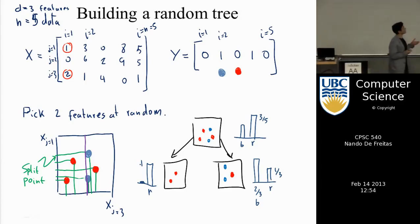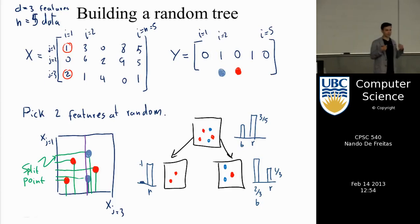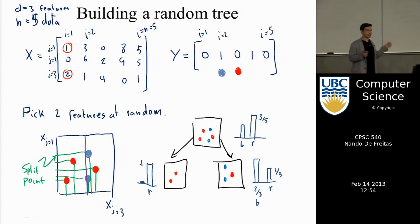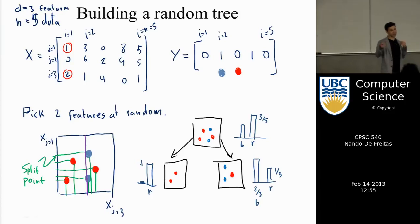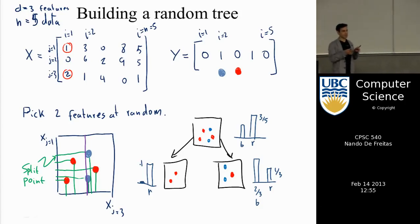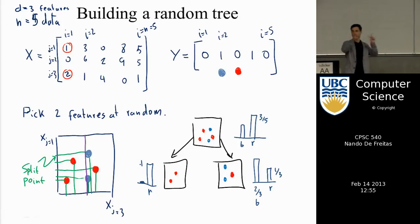That's how we construct a tree, and we inject randomness for two reasons. The first reason is computational: if D is very large — say 100,000 dimensions and a thousand points — you would have had to evaluate 100,000 × 1,000 information gains, which is computationally very large. But by choosing a subset of features at random, we only need to evaluate the split point for a few points.